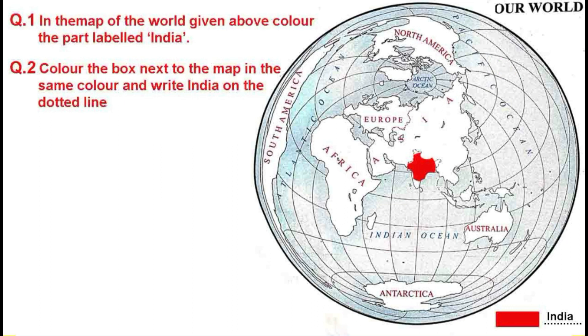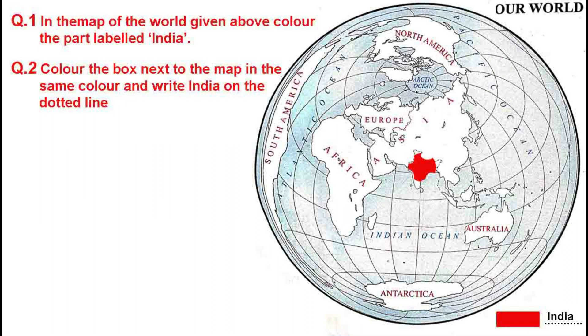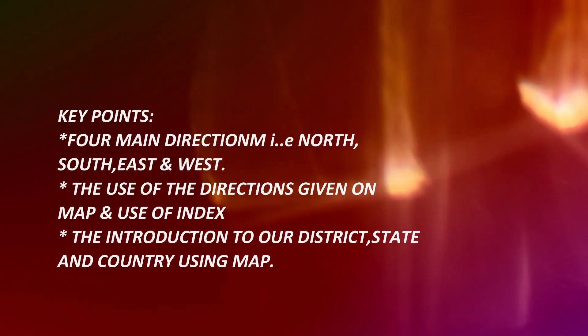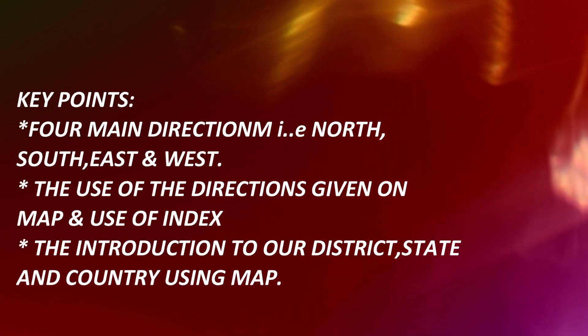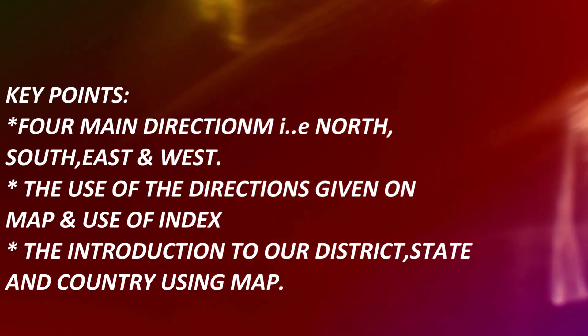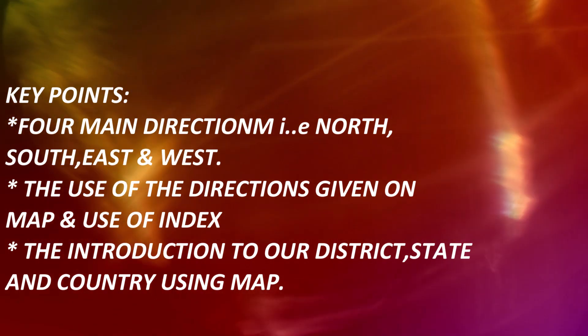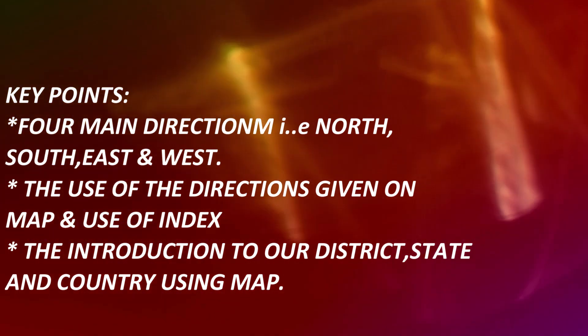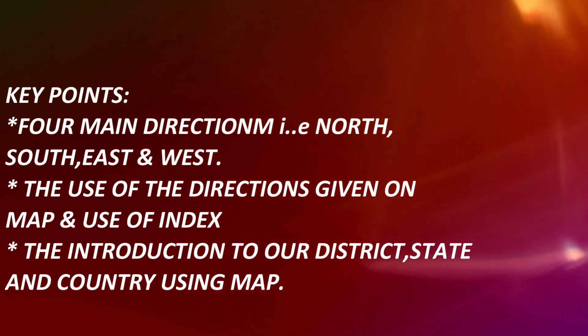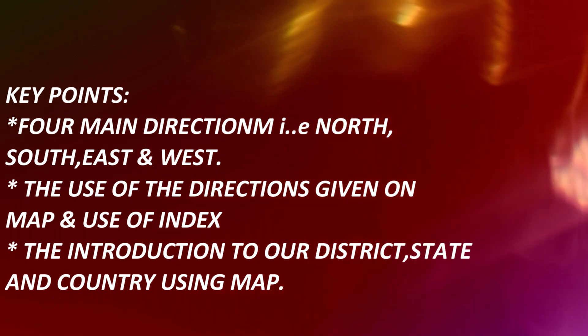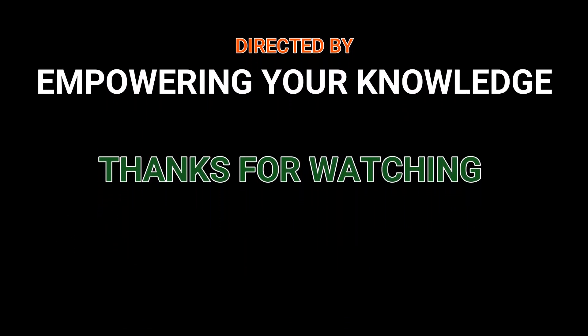It's very easy to identify in this map. The key points in this chapter were: the four main directions — North, South, East, and West — the use of directions on maps, the use of an index, and the introduction to our district, state, country, and the globe using maps. This video is directed by Empowering Your Knowledge — please subscribe to our channel. I hope you liked the video.